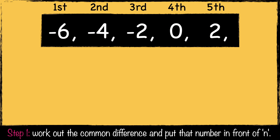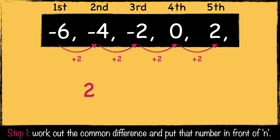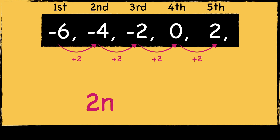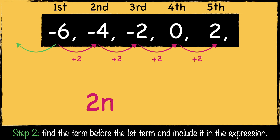Here's the last sequence: minus 6, minus 4, minus 2, 0, and 2. First, we need to work out the common difference. In this sequence, we're adding 2 to each number, so the first part of this expression is 2n. As this sequence is adding 2 each time, we need to subtract 2 to find the previous term. So minus 6 take away 2 is minus 8. So the nth term expression for this sequence is 2n take away 8.